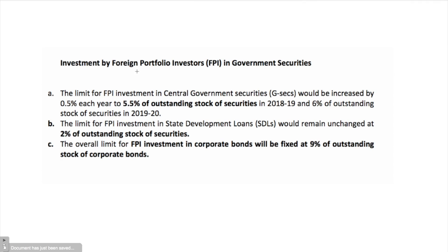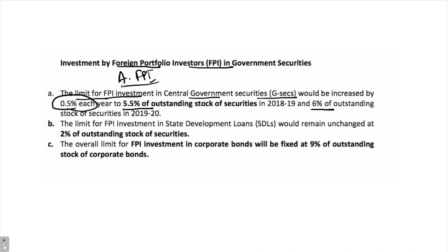What are the new rules for investments by foreign portfolio investors? The limit for FPI investment in certain government securities would be increased to 5.5% and then to 6%, increasing by 0.5% each year. The limit for FPI investment in state development loans would remain unchanged at 2% of outstanding stock of securities. The overall limit for FPI investment in corporate bonds will be fixed at 9% of outstanding stock of corporate bonds.